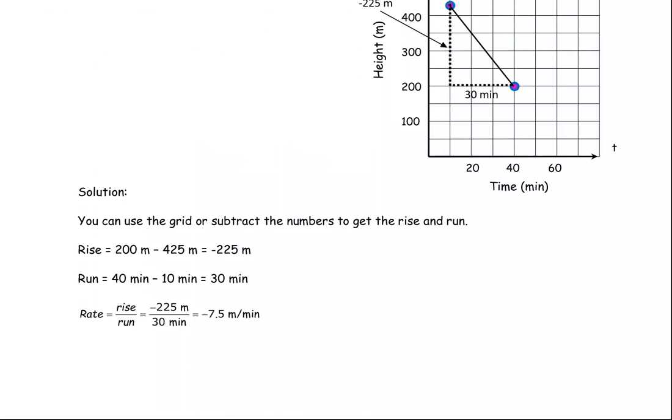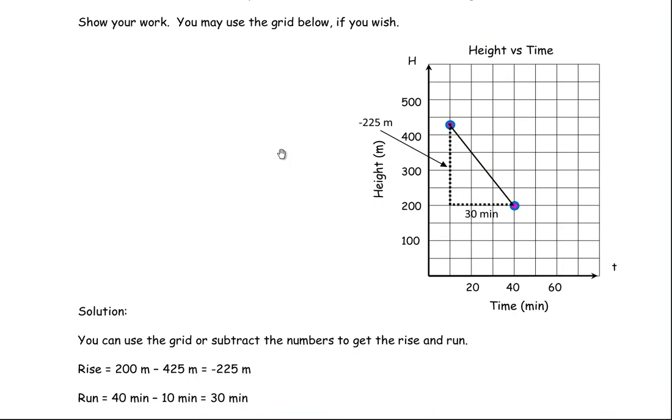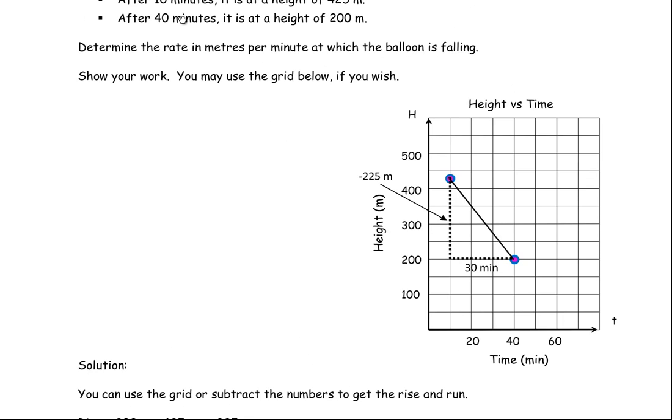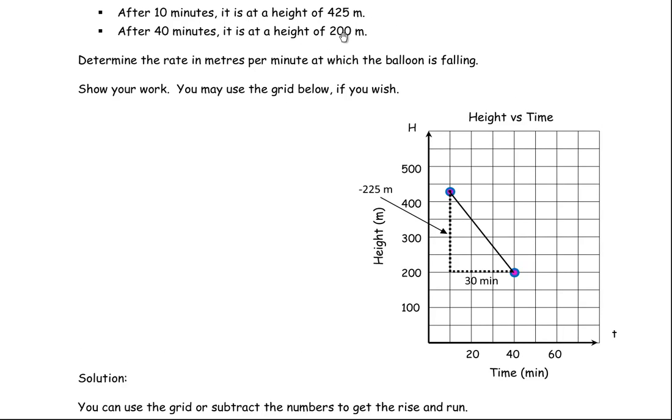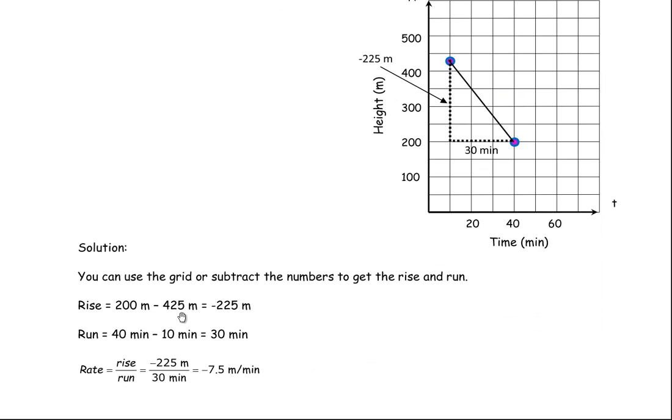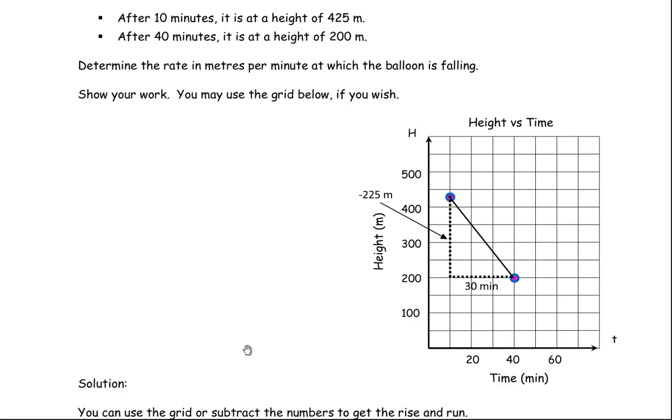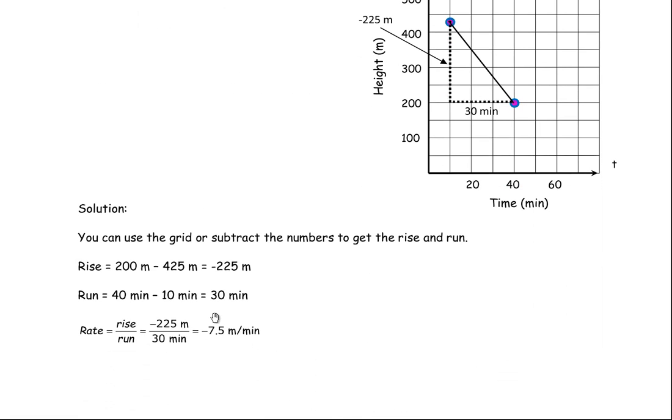Now you do not have to use the grid. You could simply say it has gone from 425 down to 200. So the rise is 200 minus 425, which is negative 225, the same calculation you did over here. It went from 10 minutes to 40 minutes, so the time has gone by 30 minutes. Again we are dividing negative 225 by 30, so the rate is negative 7.5 meters per minute that it is falling.